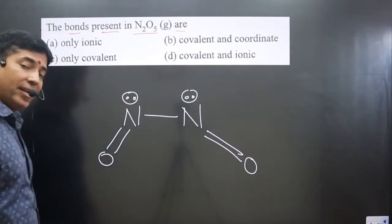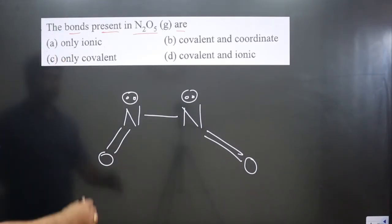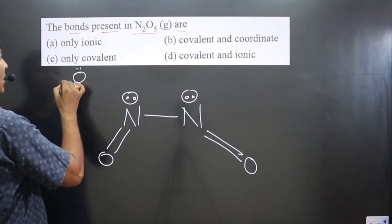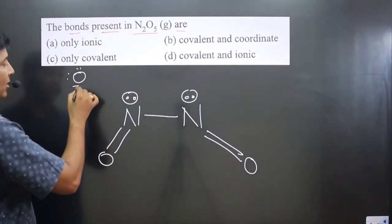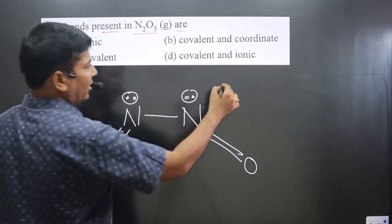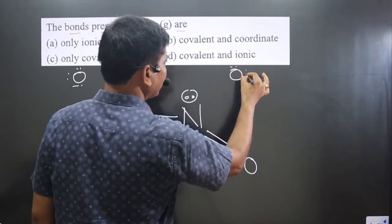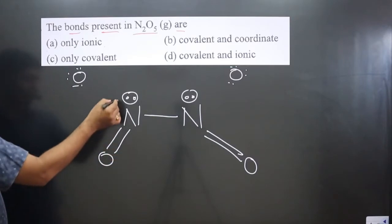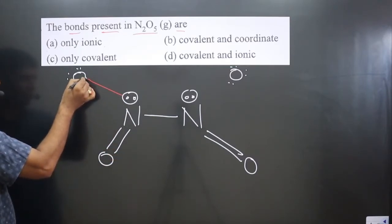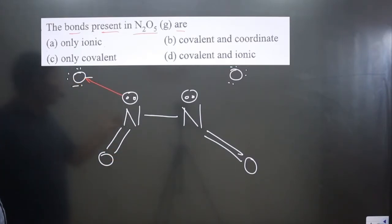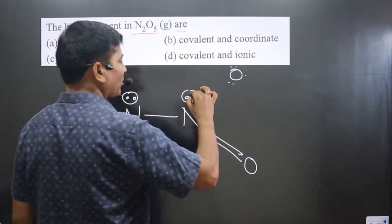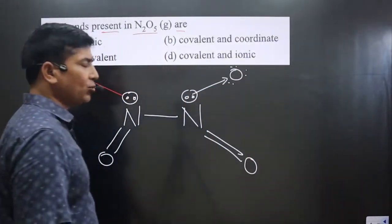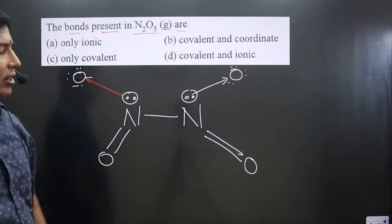Three more oxygens are left. We have one oxygen here with six valence electrons. This nitrogen donates its electron pair to this oxygen so that it can complete its octet. Similarly, this nitrogen also donates its electron pair to oxygen so that it can complete its octet.